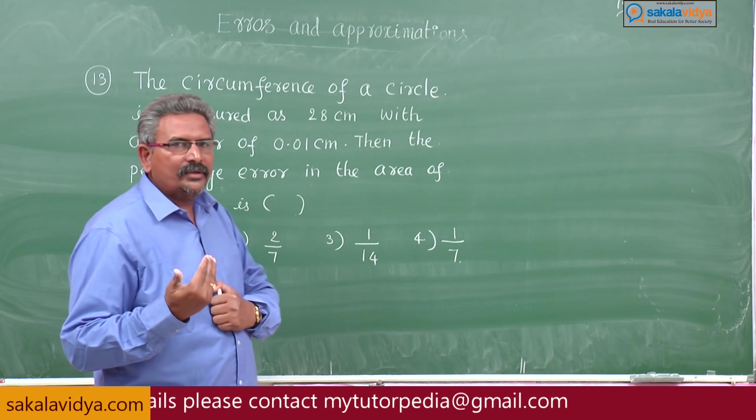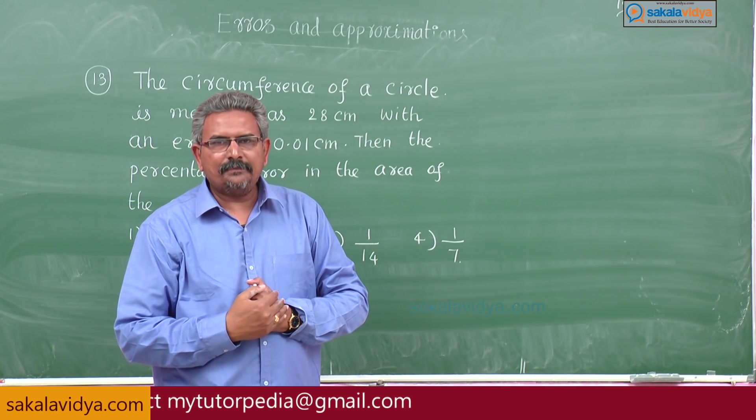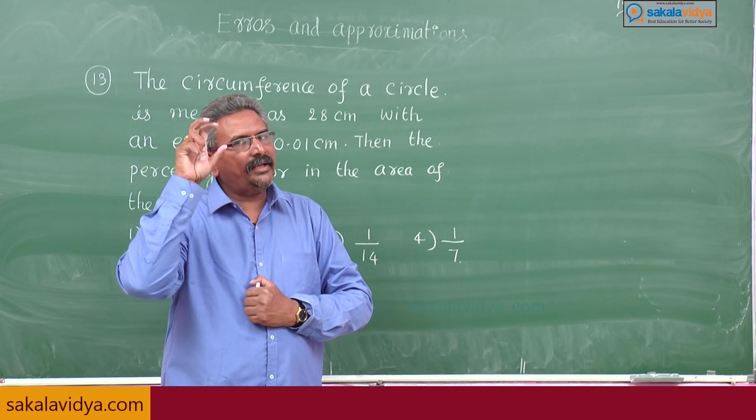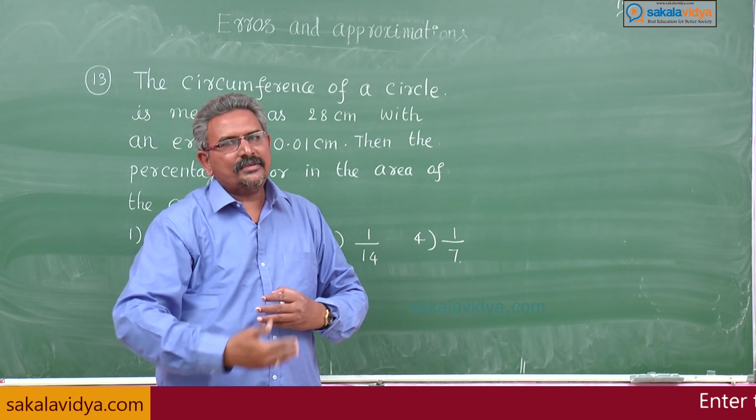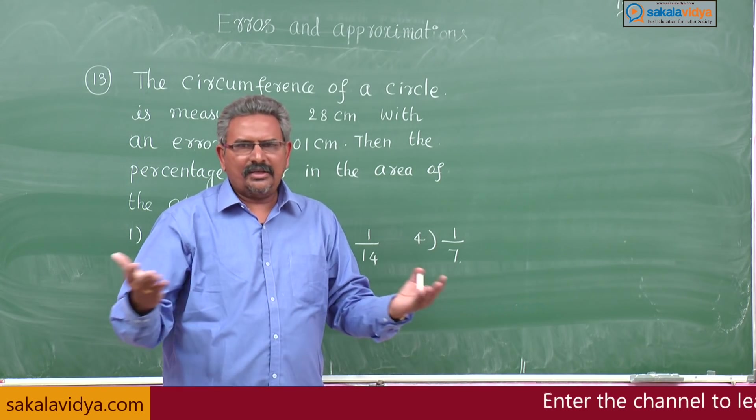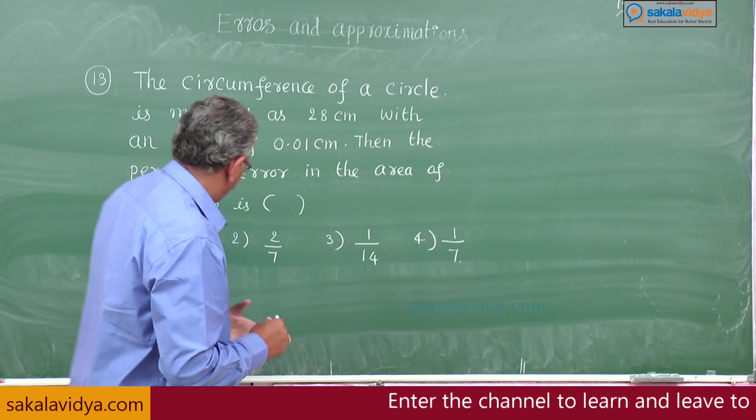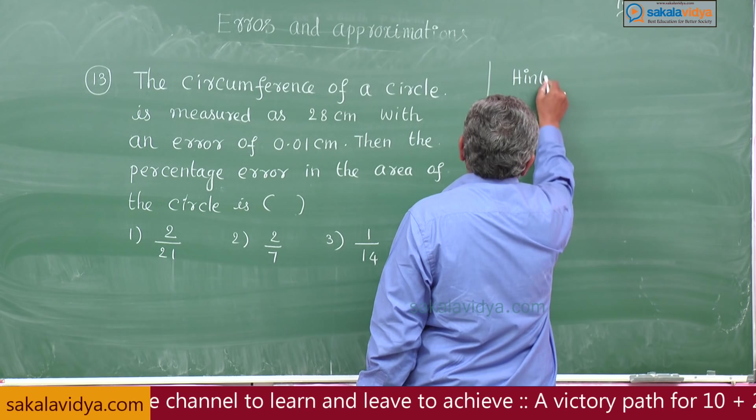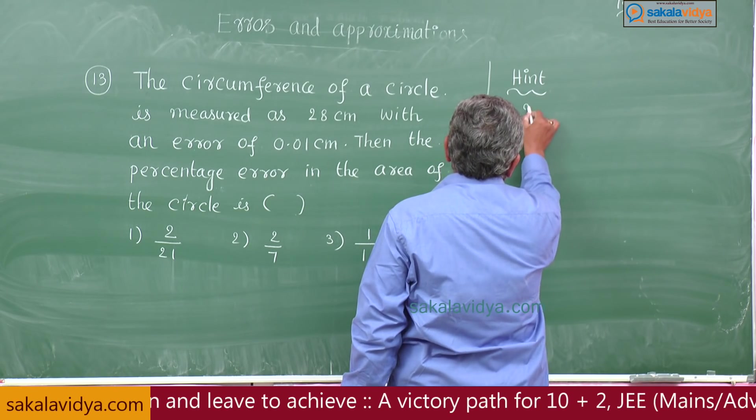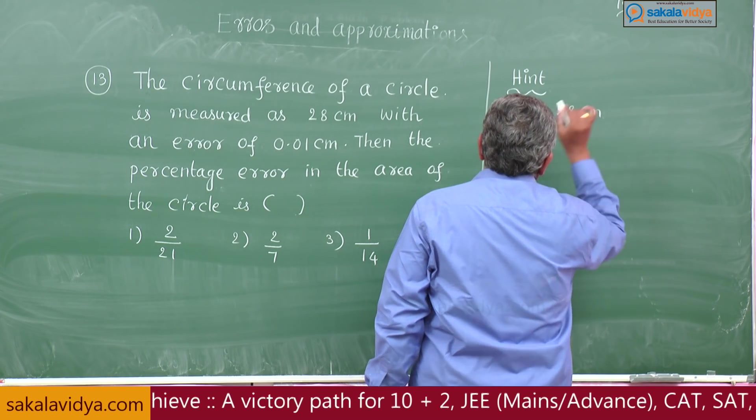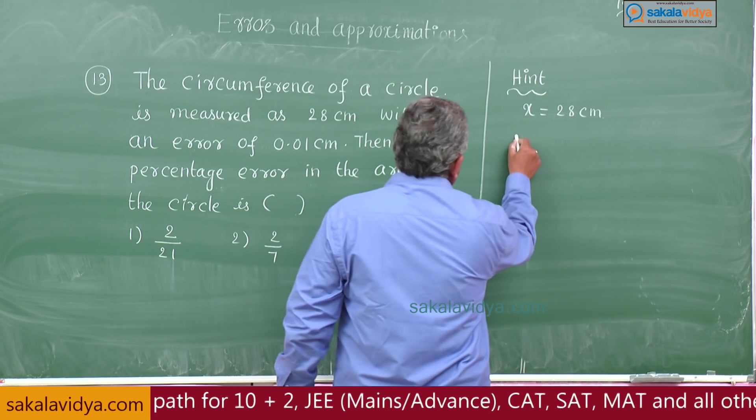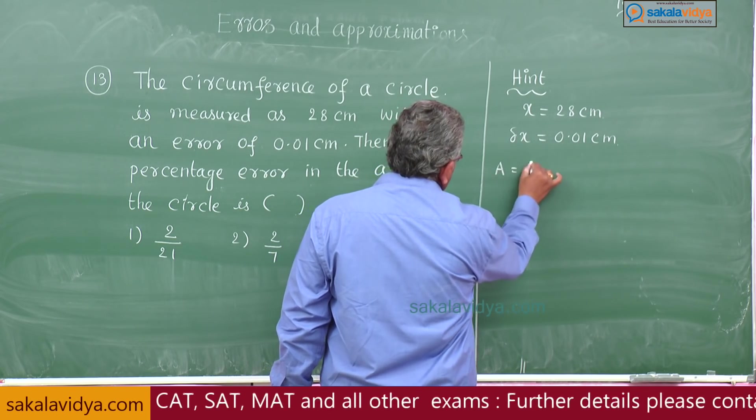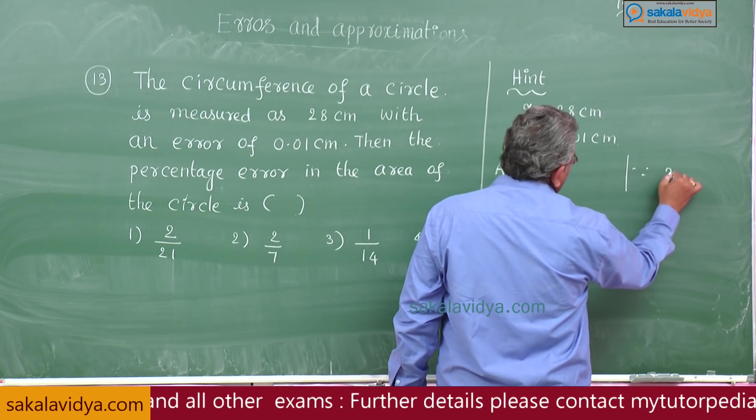What strategy has to be followed? We know the formula to find out area of the circle in terms of R, that is pi R square, but instead of radius R, circumference is given. That means R should be expressed in terms of circumference. Hint: let x be the circumference, x is equal to 28 centimeters, delta x is 0.01 centimeters. In general, area of the circle is A equals pi R square, but x is equal to 2 pi R.